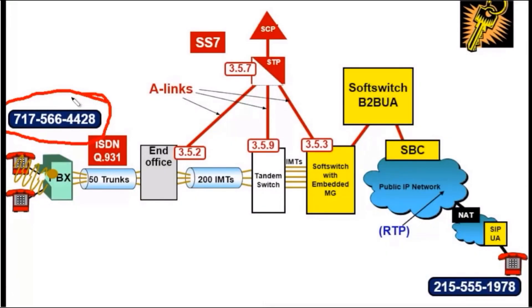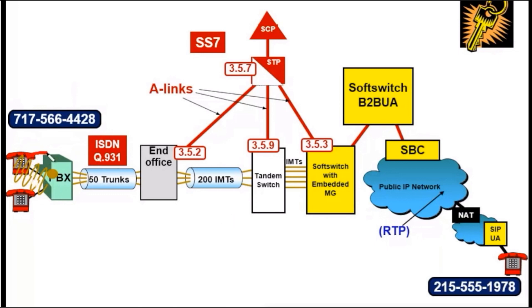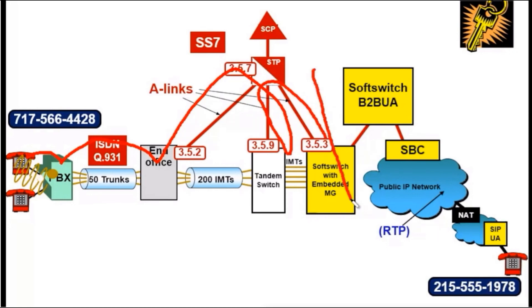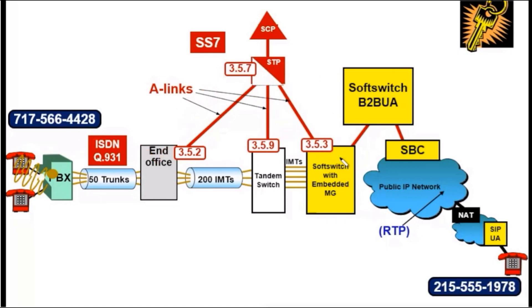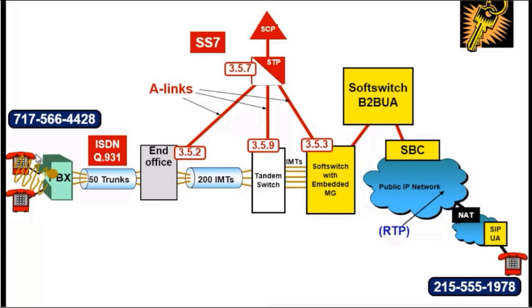Our A-party, originating from 717-566-4428, is calling 215-555-1978. Ultimately, the call setup is going to be hopping across this path, where this portion, at least that far, is going to be public switch telephone network. The remainder of the signaling path is going to be SIP. We'll talk about the interoperation right here. This is where the magic is going to occur. So our originating party goes off-hook. We have 30 milliamps of current flowing, and our user dials the phone number 9-215-555-1978.